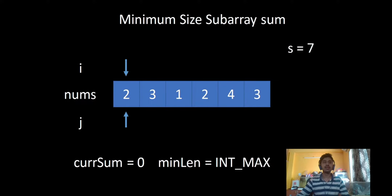We have two phases: the growing phase and the shrinking phase. In the growing phase we keep incrementing i and increase the size of the window until it satisfies the condition. Then we keep incrementing j to decrease the size and keep checking if it still satisfies. This basically helps us find the minimum subarray which satisfies the condition.